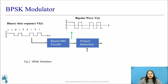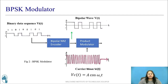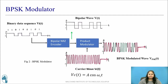It consists of a bipolar NRZ encoder and a product modulator. The binary input sequence is first applied to the bipolar NRZ encoder. This bipolar output signal is then applied to one of the two inputs of the product modulator. To the other input of the product modulator, a high frequency sinusoidal carrier signal is applied, given by Vc(t) = A cos(ωc·t). The output of the product modulator is the BPSK signal.